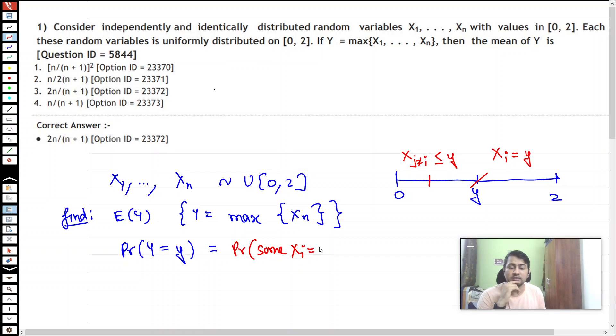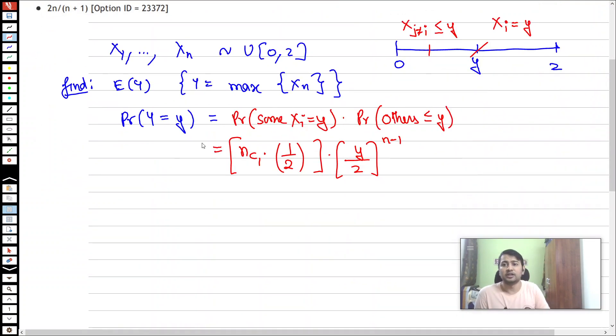The probability is: some Xi exactly equals y, multiplied by the probability that others are less than or equal to y. When I select any of the numbers from X1 to Xn, the probability that it equals y is 1/2 (since the density is 1/2 on [0,2]), multiplied by (y/2)^(n-1) for the others to be ≤y, since these are independent random variables.